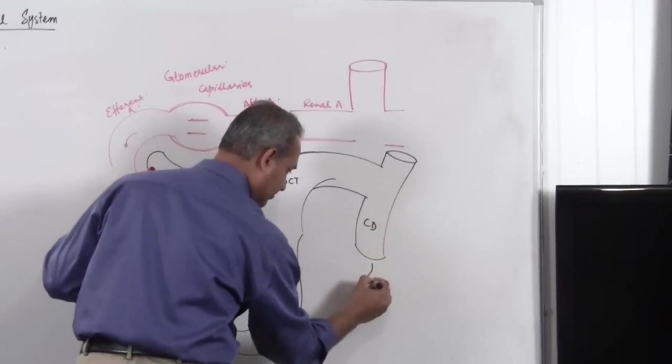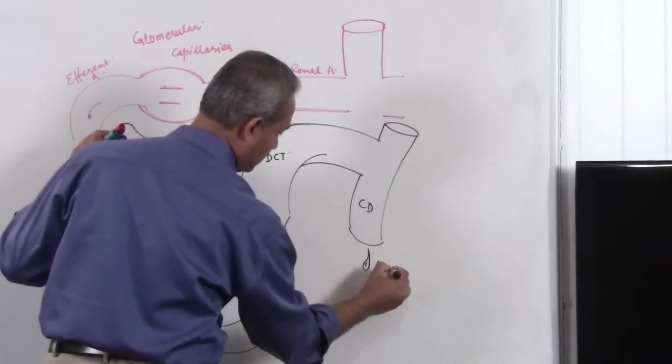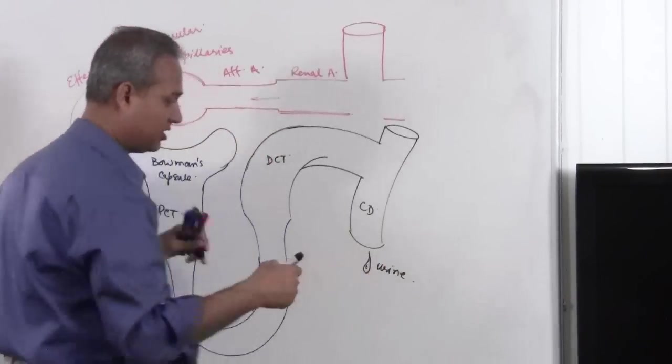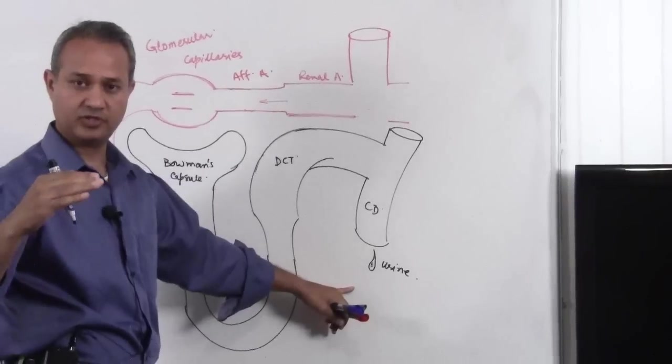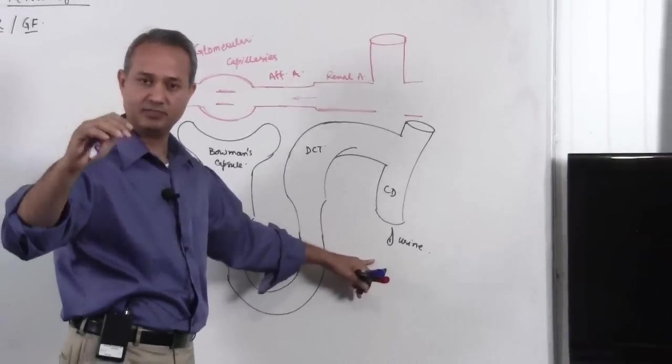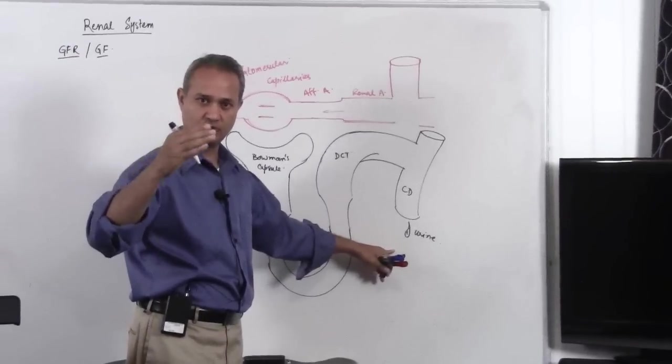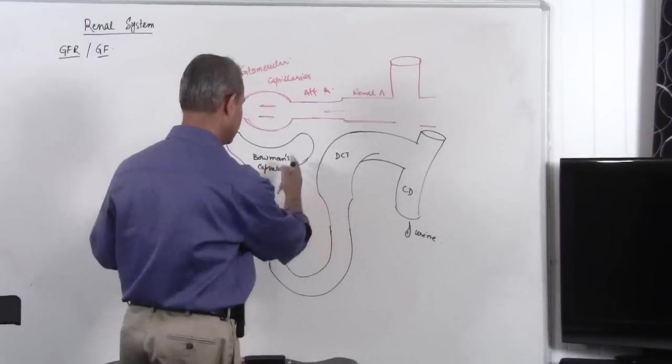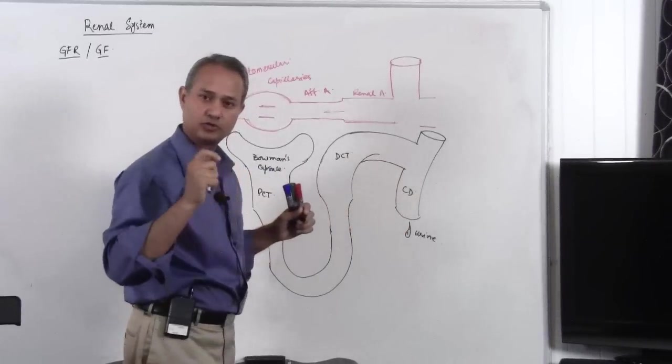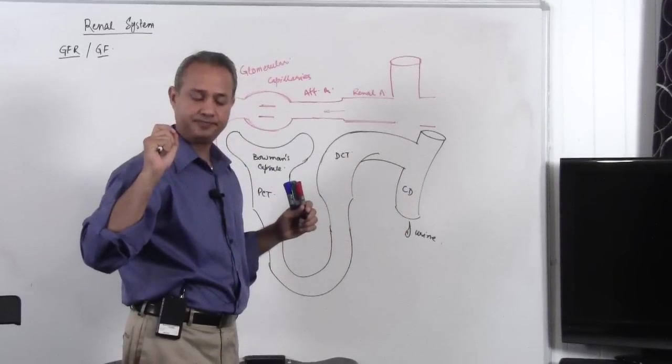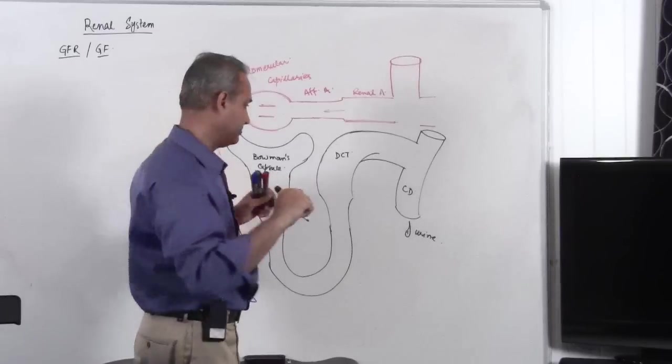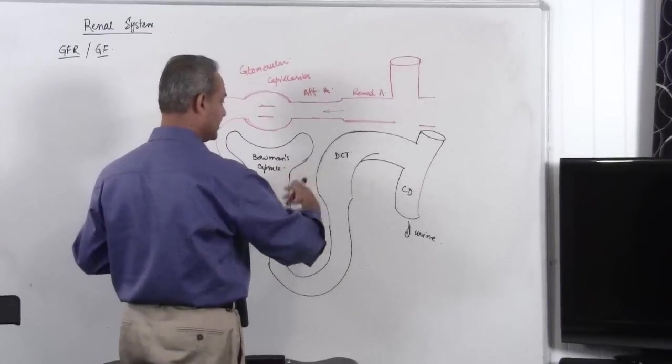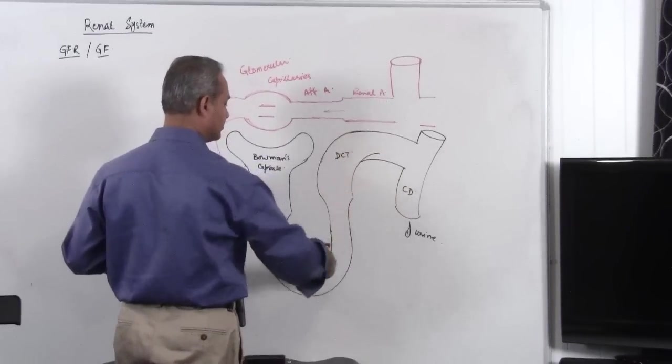Collecting duct finally forms the urine. This urine from here will go into the minor calyces, major calyces, renal pelvis, ureter, bladder, urethra and outside the body. So this system here the nephron is actually going to throw the urine outside the body. So nephron you can actually say this is a space connected to outside the body.